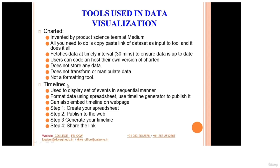Timeline is used to display a set of events in a sequential manner. If you want to display events in a timeline fashion, this is the tool to use. It is a four-step process: step one is to create a spreadsheet in XLS format; step two is to publish it to the web; step three is to generate your timeline; and step four is to share the link so everyone can view the visualization.